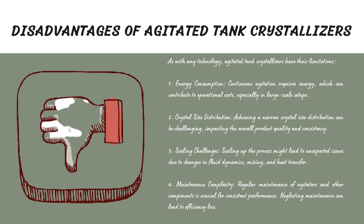The third disadvantage is scaling challenges — scaling up can introduce unexpected issues. In petrochemical industries, transitioning from a small-scale to a large-scale agitated tank crystallizer can cause problems like inefficient mixing or heat transfer, requiring careful engineering solutions. The fourth disadvantage is maintenance complexity — regular maintenance is essential. In dairy industries, agitated tank crystallizers used for milk powder production require meticulous upkeep to prevent bacterial contamination and maintain product quality.